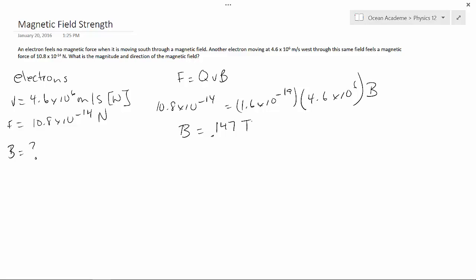So we employ our right-hand rule, and that tells us that our magnetic field strength, the direction, has to be up. Thank you.